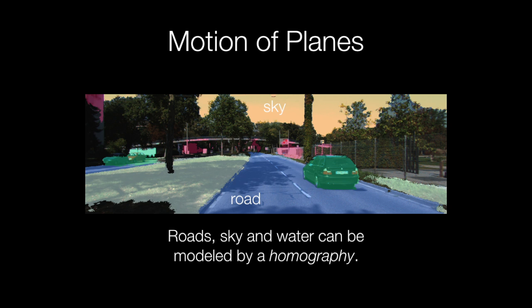Planes are regions that are roughly planar, like the road, the sky, or the water. We model these with a homography.